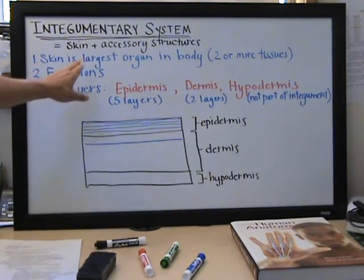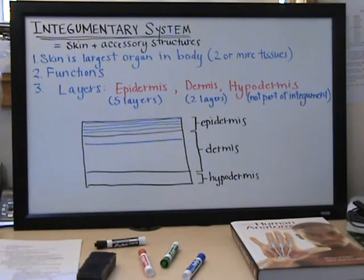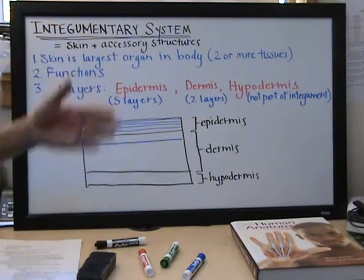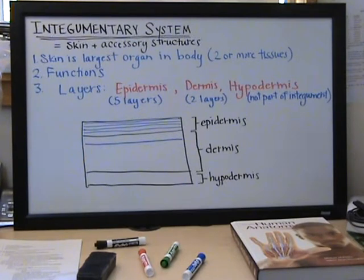The skin is the largest organ in the body and I've had people say what? Skin is an organ but it is. If we look at the definition of an organ, an organ is two or more tissues that work together and so it is by definition an organ.